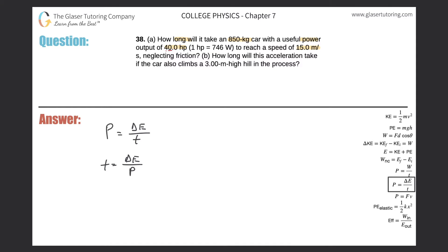So my first task is to convert 40 horsepower into watts. We've got 40 horsepower, and they gave us a conversion factor: for every 1 horsepower it's 746 watts. Horsepower cancels, so it's simply 40 times 746, which gives us a value of 2.98 × 10⁴ watts. That is our power value.